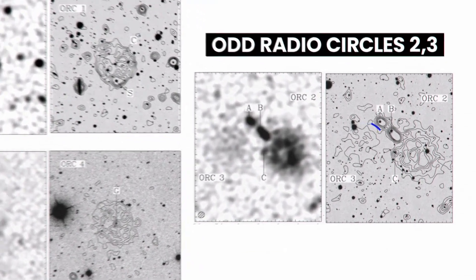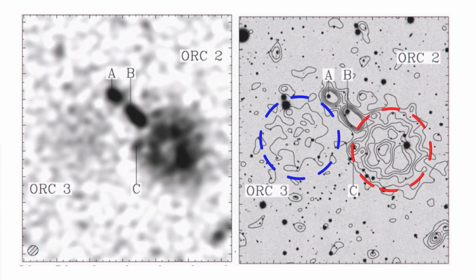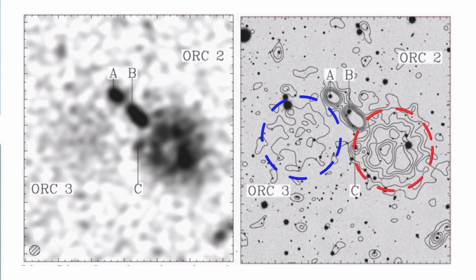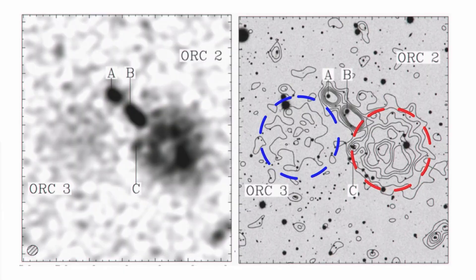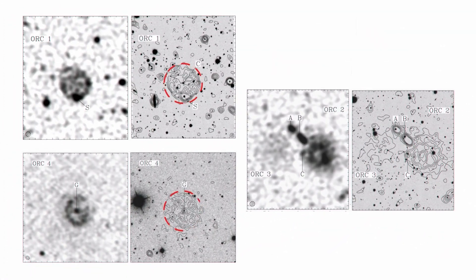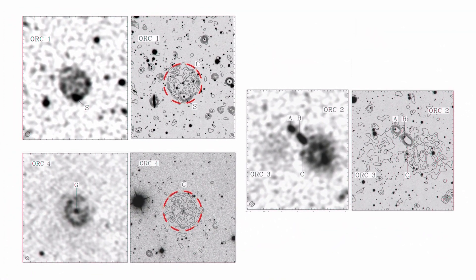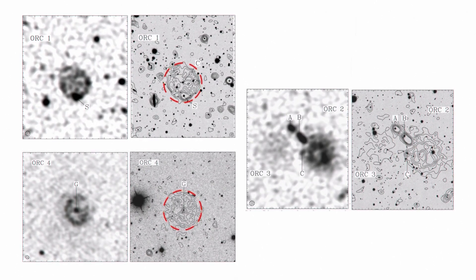There is another puzzling thing about them. Two are very close together, implying that these two ORCs have a common origin. This is not the same for ORCs 1 and 4, implying they are occurrences based on two very separate events.